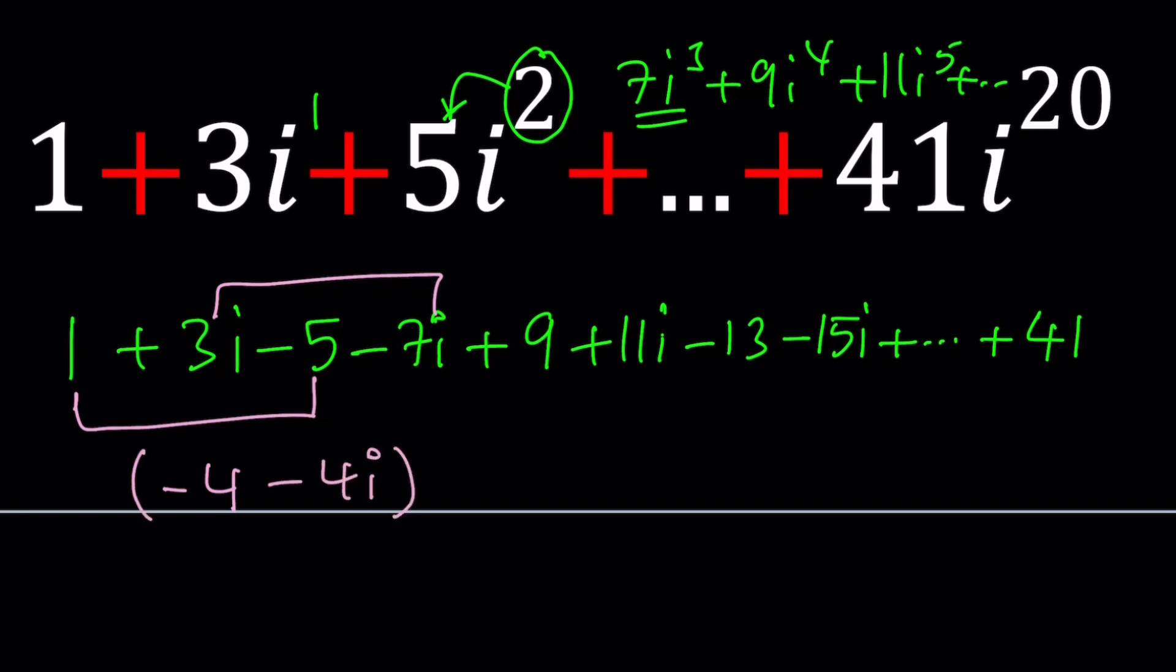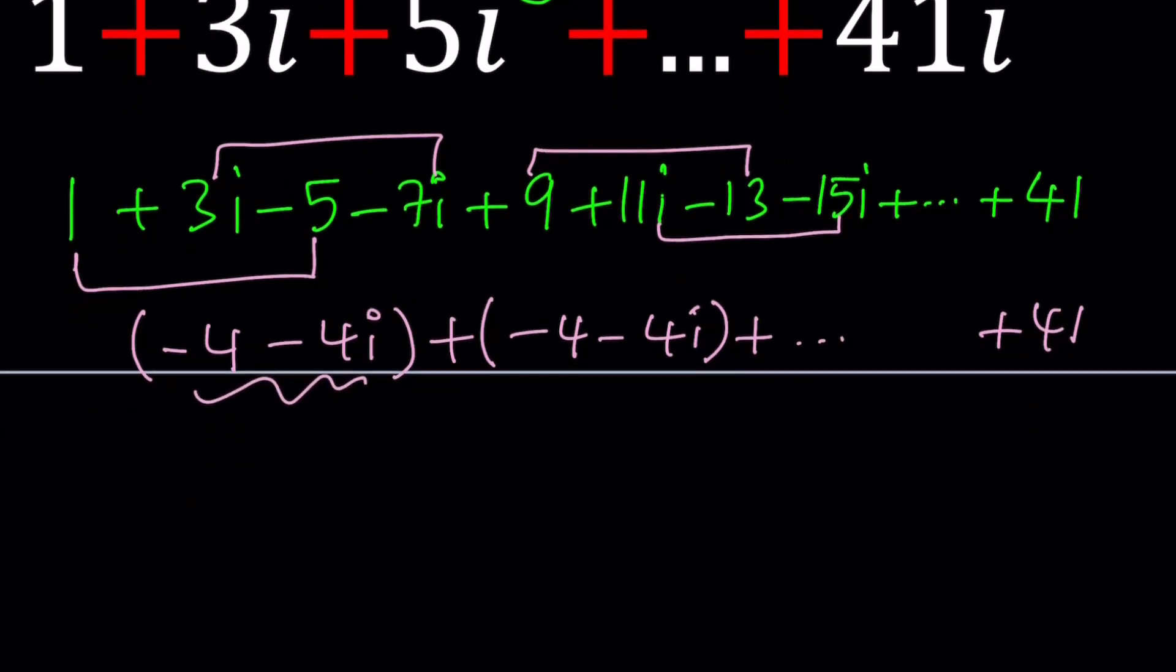That's the sum of the first four terms, and then 9 minus 13 is going to be negative 4 again, and then 11i minus 15i is going to be negative 4i. This is nice because we keep getting the same thing, and this is going to happen all the time until you hit the last term. Because remember, we have 21 terms, so one of them is going to be left over at the end, but we're going to have five groups of these, plus 41.